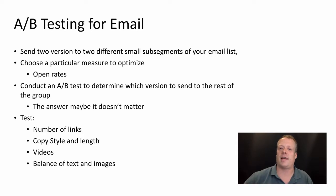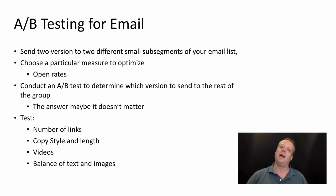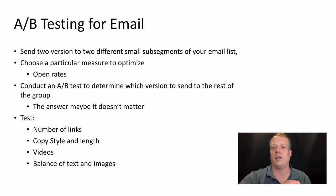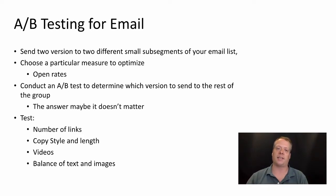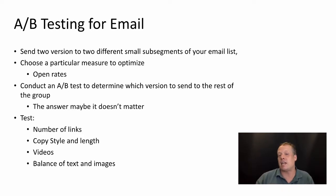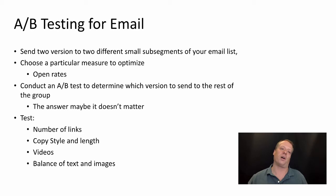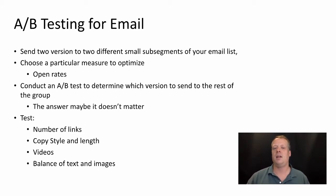It's important to remember that you can A/B test emails, though the way you do it is slightly different than on a website. You basically send two different versions to two different small sub-segments of your email list and choose a particular measure to optimize, like open rates. You then conduct the A/B test, determine which version performs better, and send that version to the rest of the group.